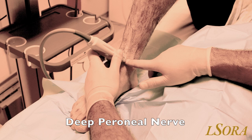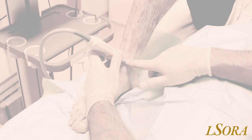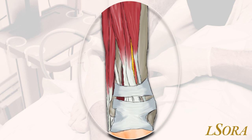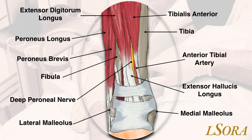The third nerve we block is the deep peroneal nerve. This diagram highlights the anatomy relevant to the deep peroneal nerve. Looking at the front of the ankle, behind the extensor retinaculum, you'll see extensor digitorum longus, extensor hallucis longus, and tibialis anterior. The deep peroneal nerve lies between extensor hallucis longus and tibialis anterior, closely approximated to the anterior tibial artery, which distally becomes the dorsalis pedis.